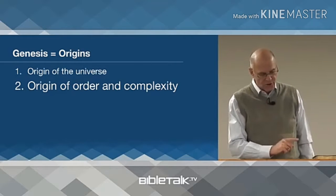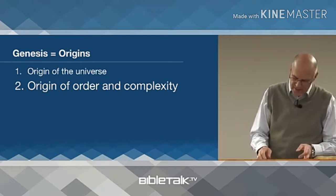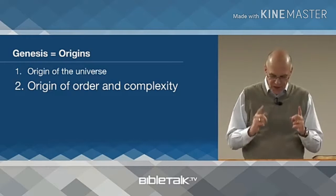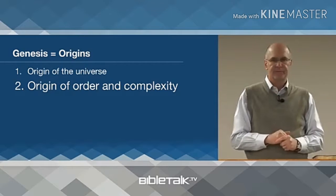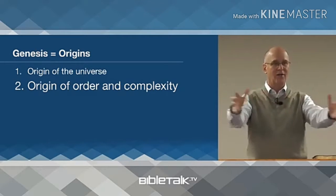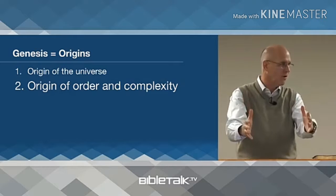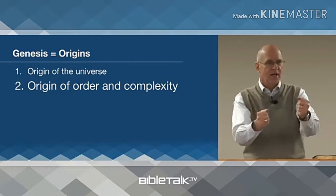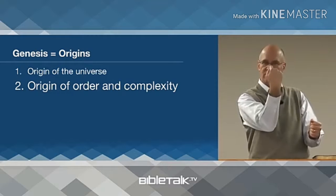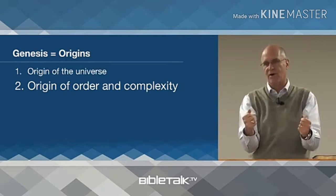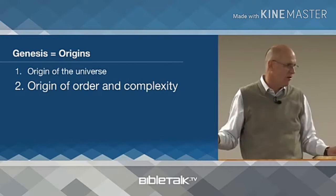Genesis gives us the origin of order and complexity. Universal observation has stated that orderly and complex things tend to naturally devolve into disorder and decay. Your brand new car — it starts working perfectly, and then a truck goes by and there's a chip in your window. That's the same with everything — our new carpets, everything brand new begins to devolve. The Bible gives us the origin of order and complexity: where did the order begin?